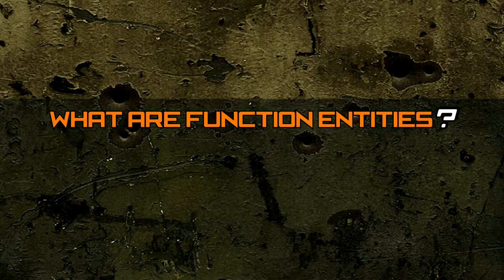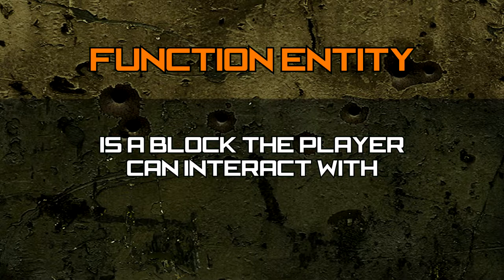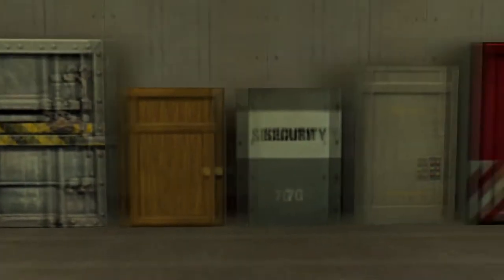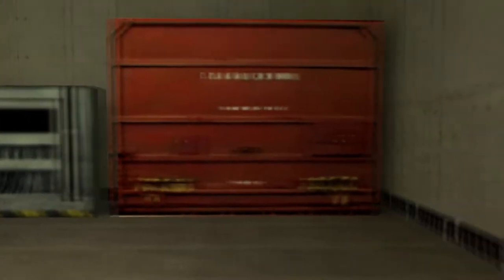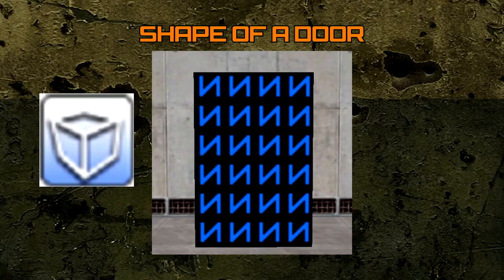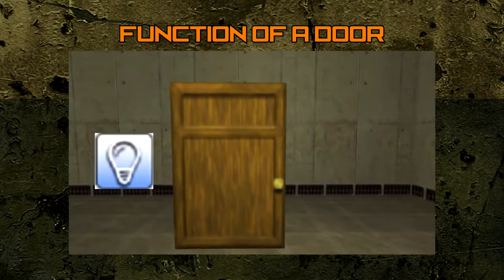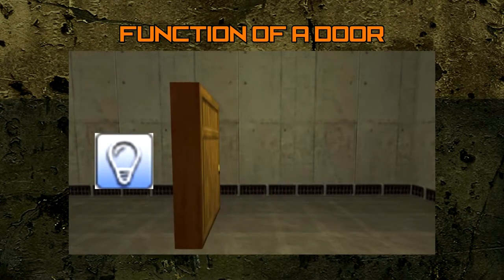What are function entities? A function entity is a block entity that the player can interact with. The most basic common function entity is the doors in Half-Life. Each door begins as a block that is textured to look like a door and then is transformed into a function entity to behave or function like a door.